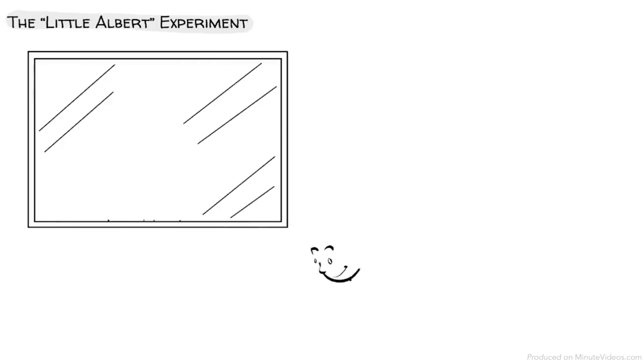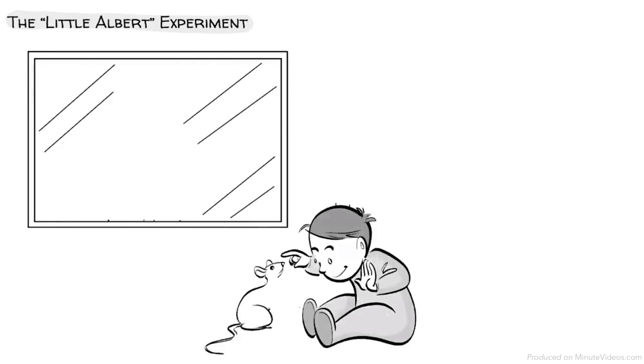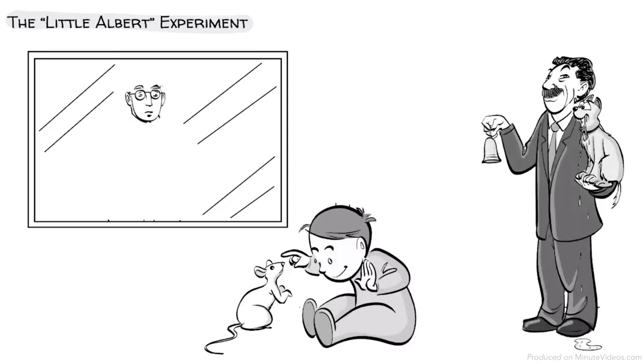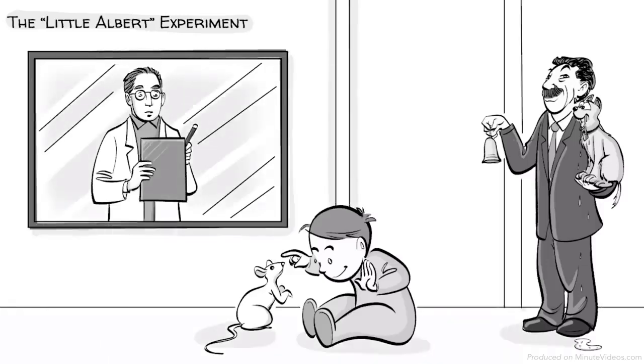With the Little Albert experiment, Watson used the method of classical conditioning to program a baby to be afraid of a lab rat. Earlier, Pavlov demonstrated how conditioning can trigger biological responses that are inherited genetically. Watson hypothesized that we can also instill new behaviors that were not inherited.